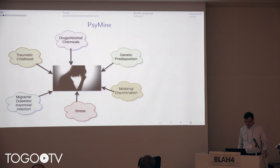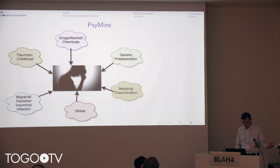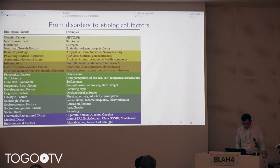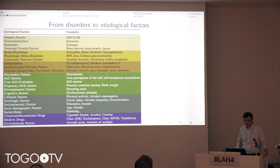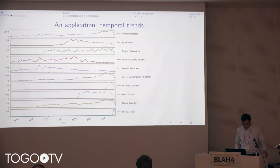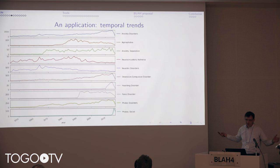Another project I'm involved in deals with causes of psychological disorders. This is a collaboration with the Institute of Psychology at the University of Zurich. The idea is that from the literature, we want to extract potential causes — for example, this gene might be involved in schizophrenia. There are many potential causes of disease, and it's a very broad and difficult category to define. We created a small manually annotated corpus with relationships between causes and disorders, and we do various studies including temporal analyses of disease distribution.